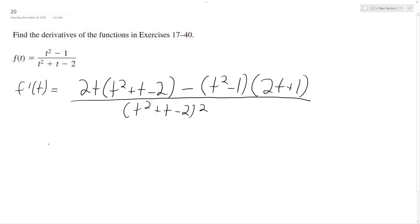So continuing on, I'm going to combine like terms in the numerator. So I get 2t cubed plus 2t squared minus 4t minus, and then what we have on the right here ends up being, after I FOIL and distribute the negative sign, 2t squared, or minus 2t cubed minus t squared plus 2t plus 1.